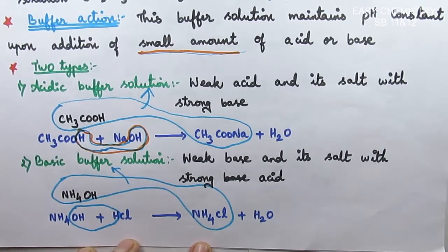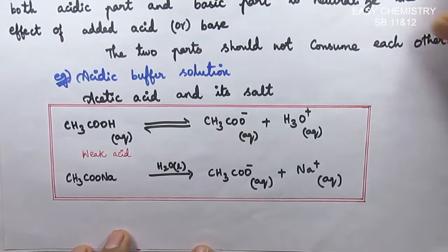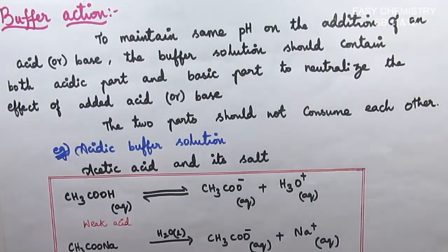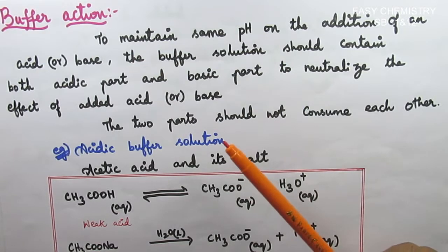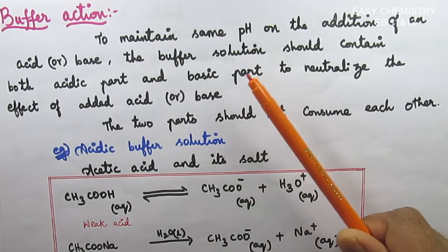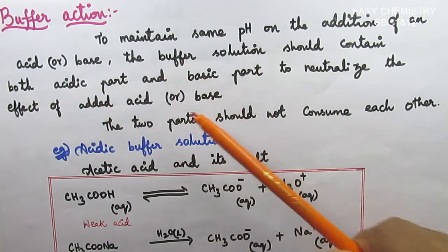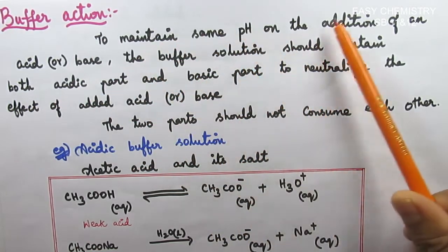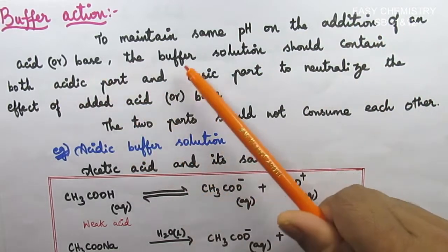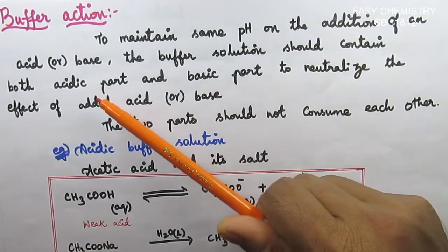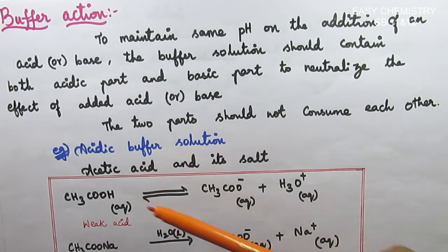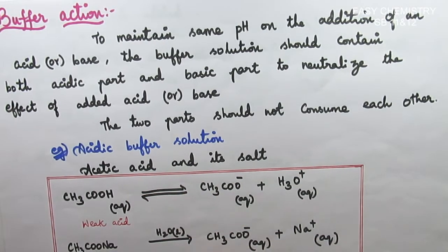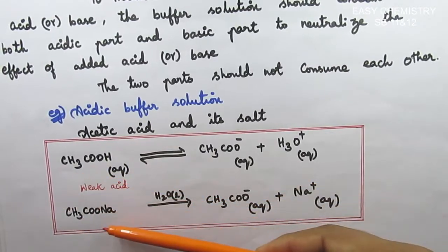So, there are two types of buffer solution. Now let us talk about buffer action. Buffer action is the ability to maintain the same pH upon the addition of an acid or base. The buffer solution should contain both an acidic part as well as a basic part to neutralize added acid or base. Let us consider acetic acid and its salt sodium acetate — if we mix them, we get an acidic buffer solution.